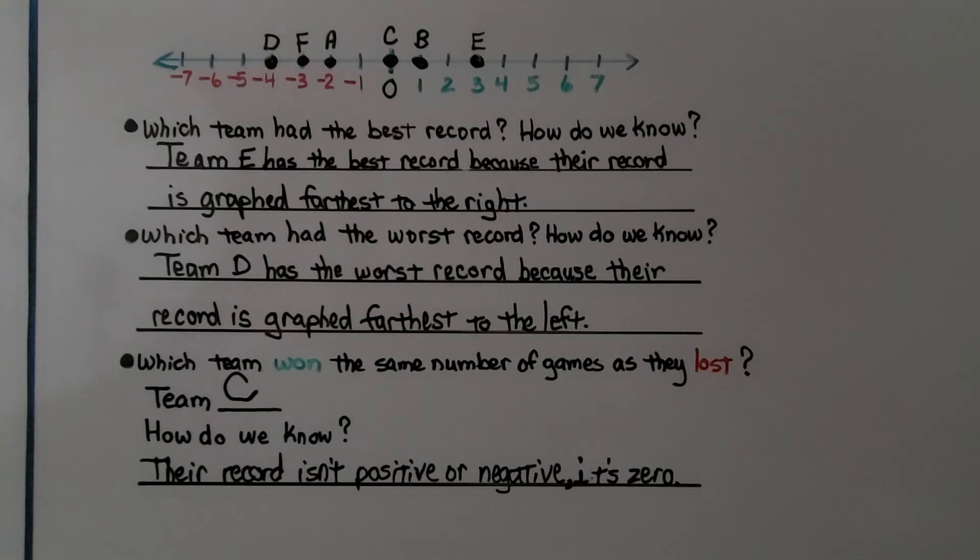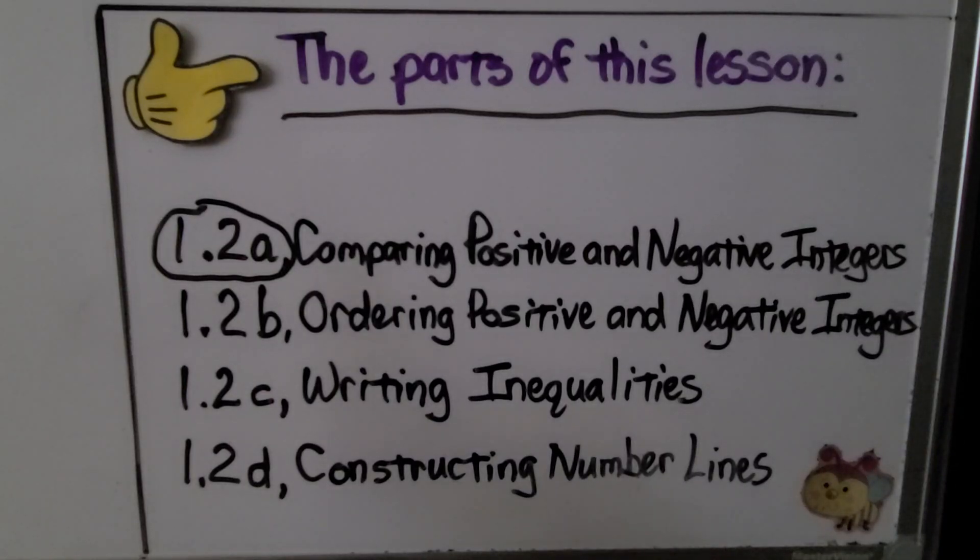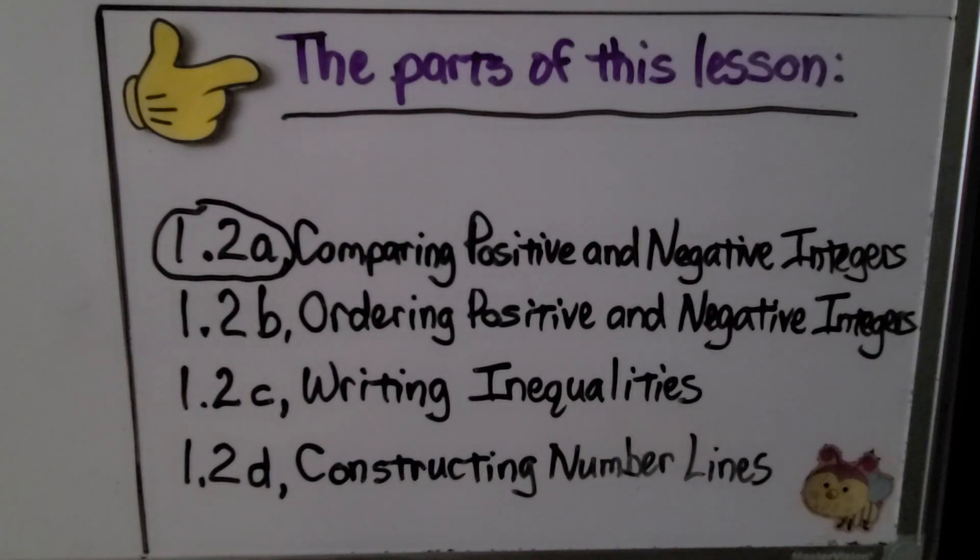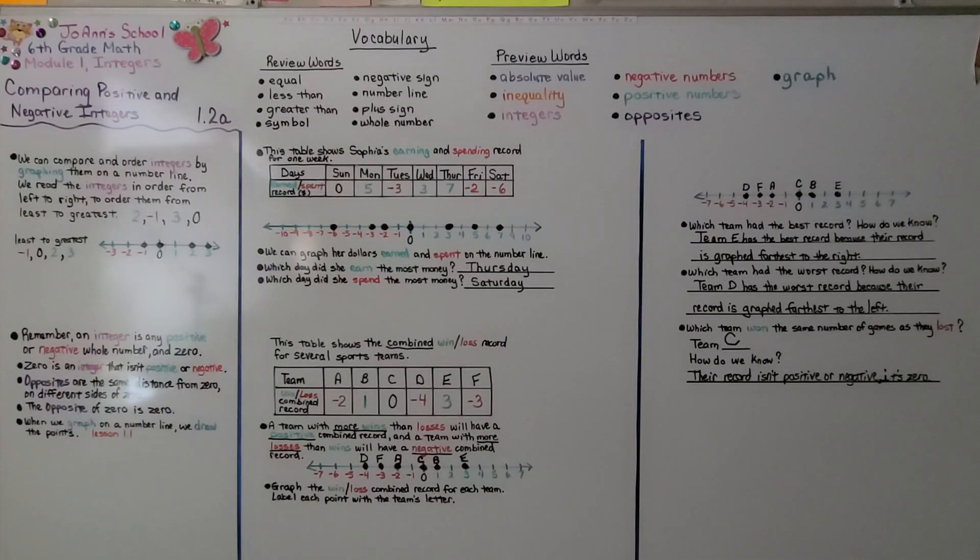If they had more wins, it would be a positive number. If they had more losses, it would be a negative number. So they must have had the same number of wins and losses to make it zero. The next part of this lesson is lesson 1.2b, ordering positive and negative integers. I hope you have a wonderful day and I hope to see you for our next lesson. Remember to hit the like button. Bye.